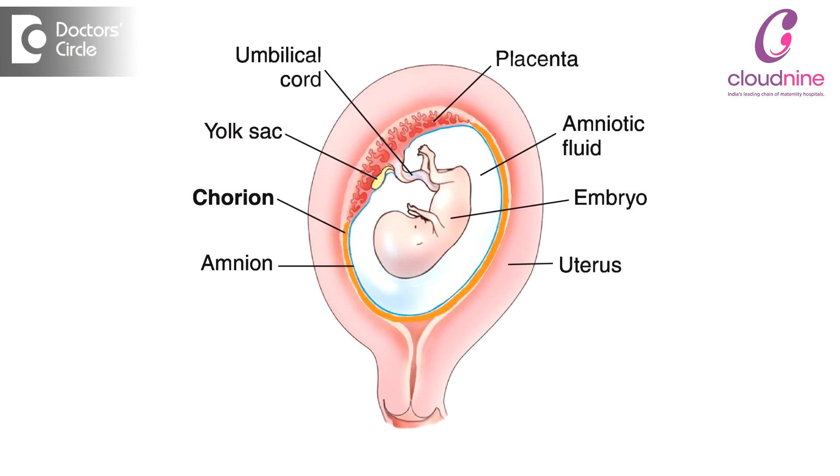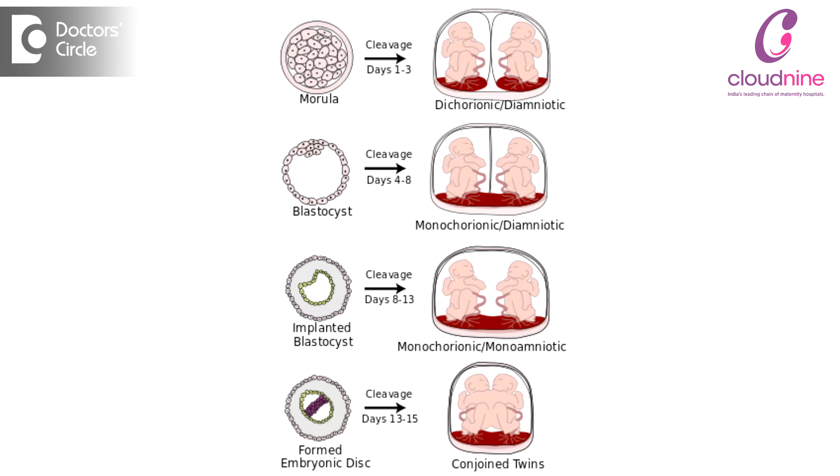It's very important to understand the term chorionicity in twin pregnancy because the outcome depends on the chorionicity. Chorion is a membrane which covers or surrounds the baby, and depending on the number of chorion membranes we call it a dichorionic or monochorionic pregnancy. In dizygotic twins it will invariably be dichorionic, whereas in monozygotic twins it could be monochorionic or dichorionic depending on the stage of division.